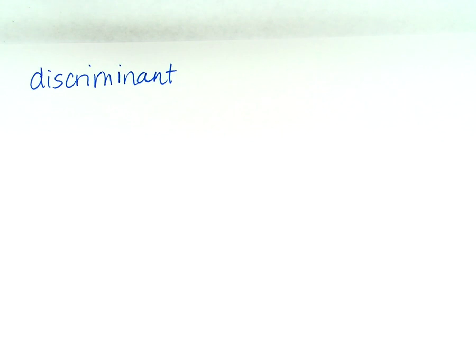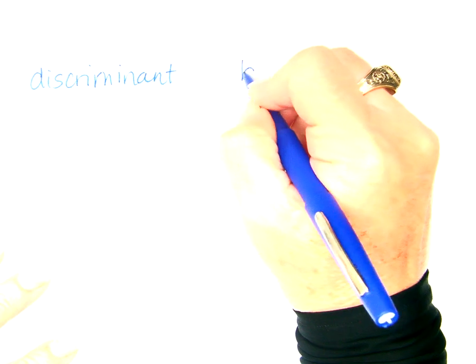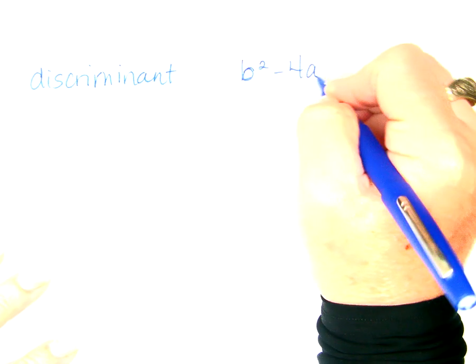The discriminant is what we are talking about today. The discriminant is defined as b squared minus 4ac.